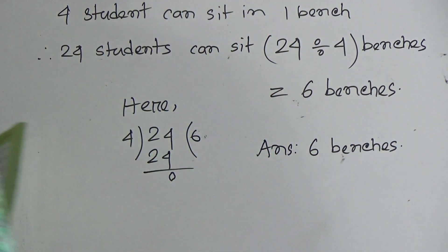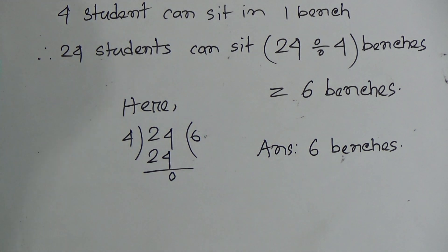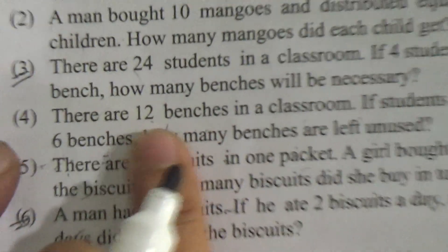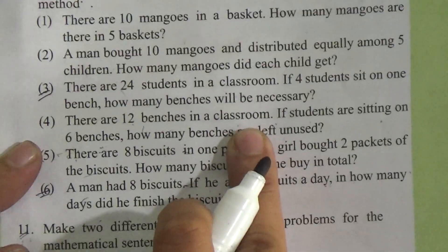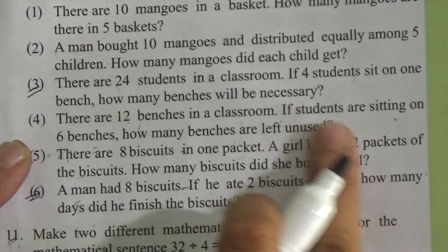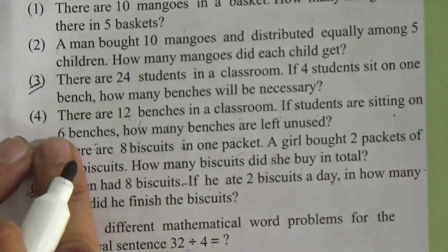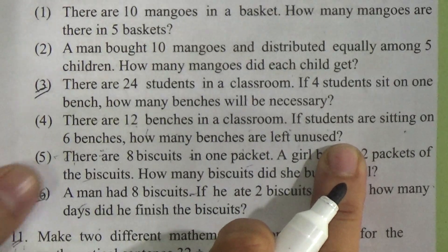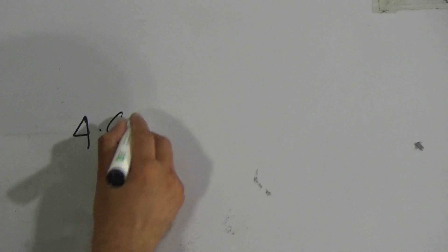The answer is 6 benches for the total 24 students. Now question number 4 — look here. There are 12 benches in a classroom. If students are sitting on 6 benches, how many benches are left unused? For the solution of question 4, we can write: Given that there are 12 benches.